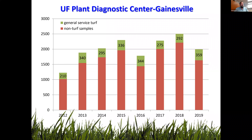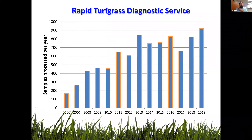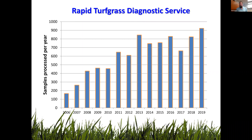We have a one-stop IFAS diagnostic services website where you can click through to plant diagnostic clinics, insect ID services, the nematode assay lab, soil testing, and more. That's linked through the EDIS system on the IFAS extension web page — you can scan the QR code on our literature. We do about 3,000 samples per year: roughly 1,500 to 1,800 non-turf general samples, 300 turf general samples, and approximately 800 to 900 rapid turf diagnostic samples. About half of all samples are turf grass, with landscape ornamentals, palms, vegetables, and small fruits making up the balance.